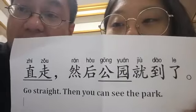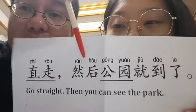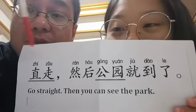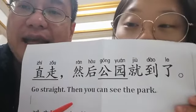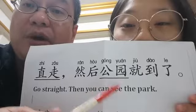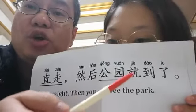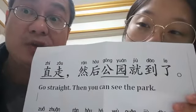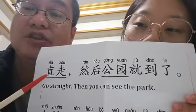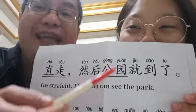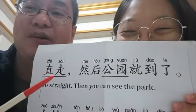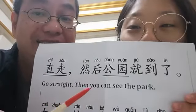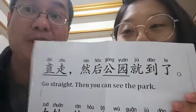We'll give you some example sentences so you can get familiar with this sentence pattern. The first one: 直走，然后，公园就到了. 直走 means go straight. 然后 means then. 公园 means park. 就到了 means you can see the place. So: go straight, then you can see the park. That's the way you tell people the directions.